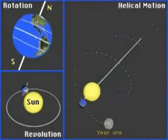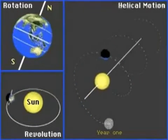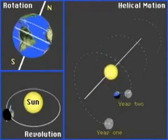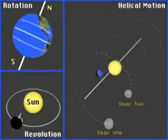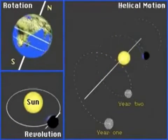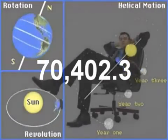So far we have basically three directions of motion: we have wobble, we have spin, and we have orbit. And we have a combined speed of 1,041.7 plus 69,360.73 for a total of 70,402.3 miles per hour for a person sitting in a chair at the equator.